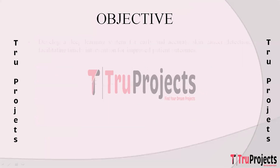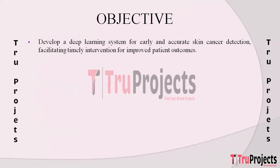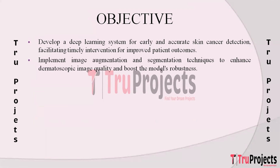The primary aim of the project is to develop an automated system using deep learning techniques to enable early and accurate detection of skin cancer, emphasizing timely intervention for improved patient outcomes. The second aim is to implement advanced image processing methods including augmentation and segmentation to enhance the quality of dermoscopic images and improve the robustness of the skin cancer detection model.